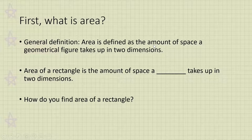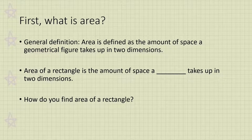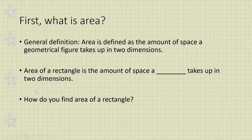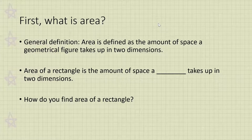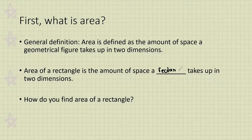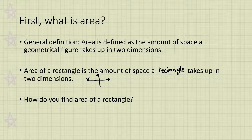First, we're going to have a quick recap of what area is. Our general definition of area is defined as the amount of space a geometrical figure takes up in two dimensions. So what does that mean for the area of a rectangle? The area of a rectangle is the amount of space that a rectangle takes up in two dimensions — like our coordinate plane, so X and Y.